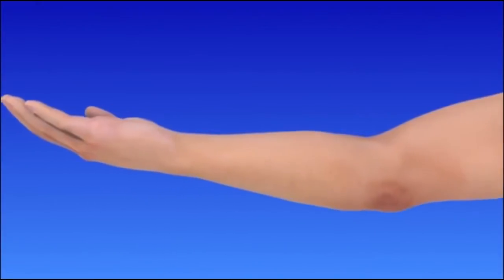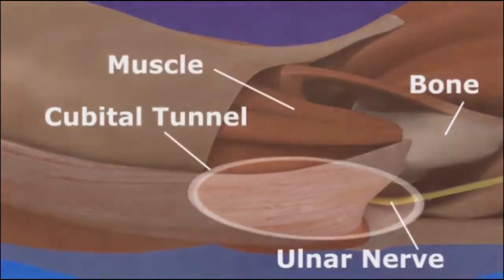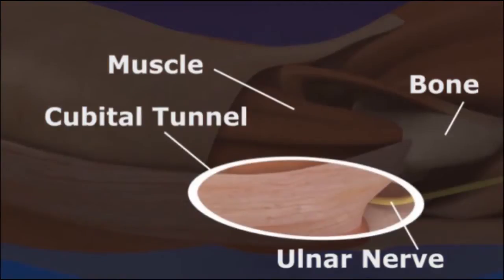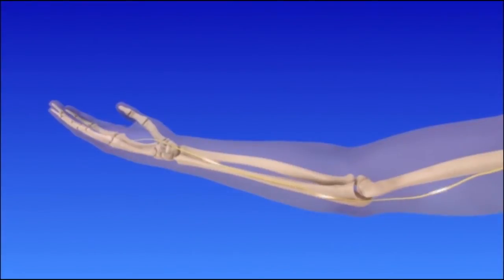Cubital Tunnel Syndrome is caused by pressure on the ulnar nerve at the inside of the elbow. The nerve can become compressed when it passes through a passageway formed by muscle, ligament, and bone called the cubital tunnel. The ulnar nerve carries signals for sensation and movement to the hand and forearm.